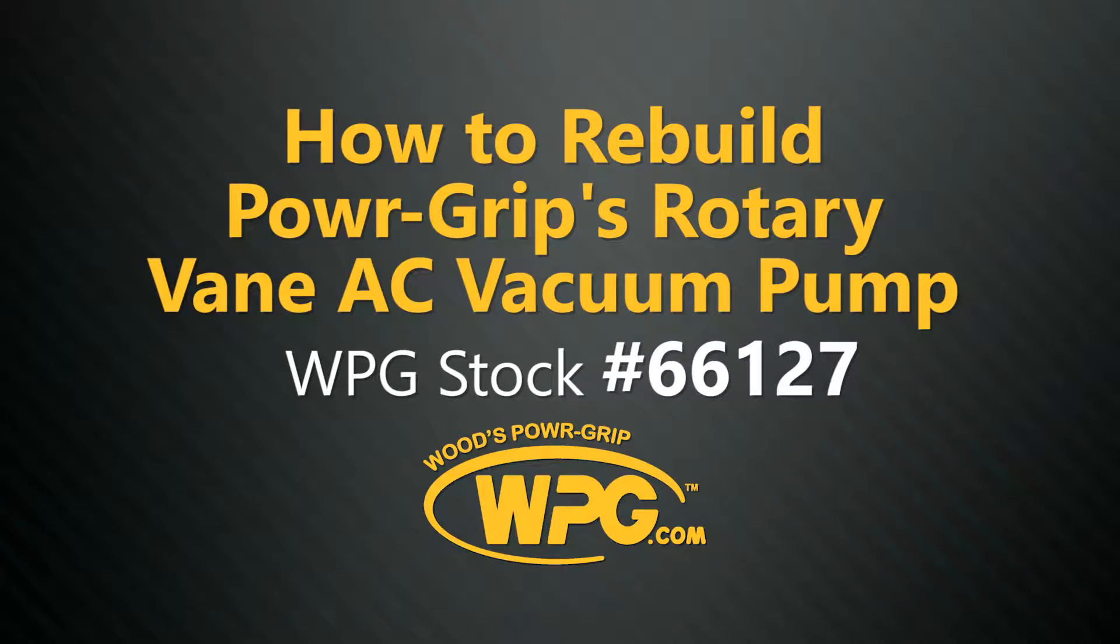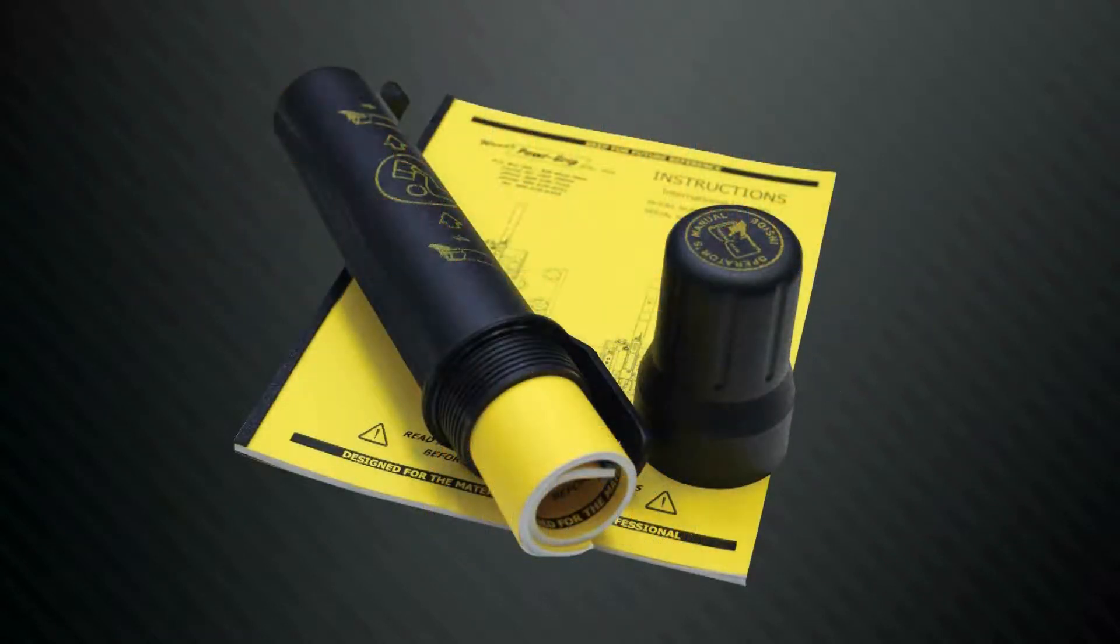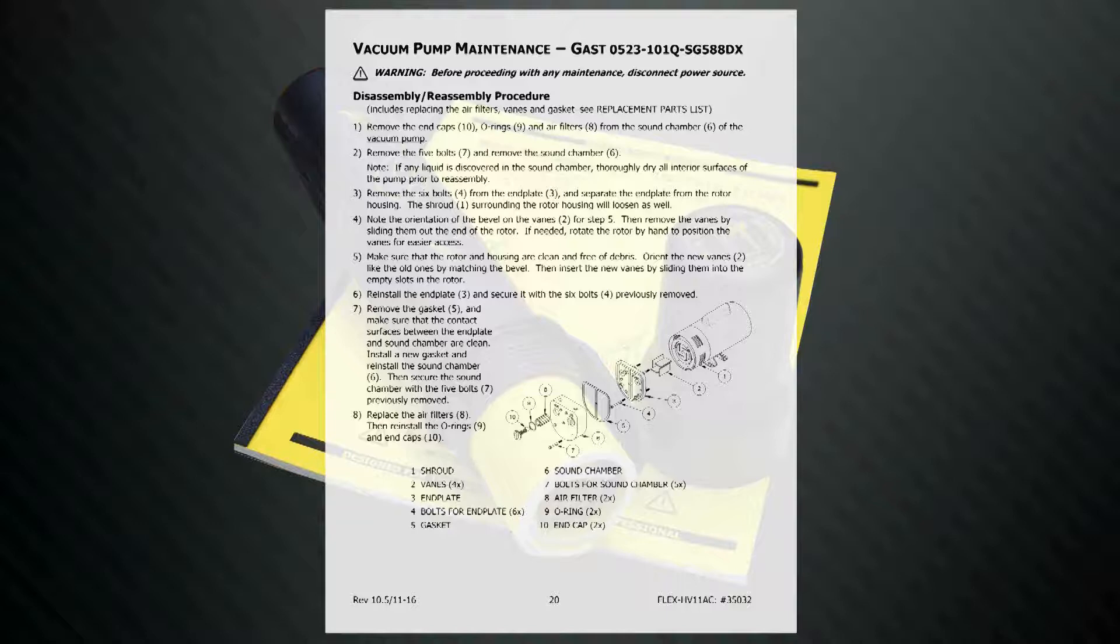Today we will demonstrate how to rebuild Power Grips Rotor Reveying AC Vacuum Pump No. 66127. Before conducting any maintenance on your vacuum pump, refer to the vacuum pump maintenance sheet located in the instruction or service manual provided with your lifter. It will provide a pictorial reference for the parts and process involved.